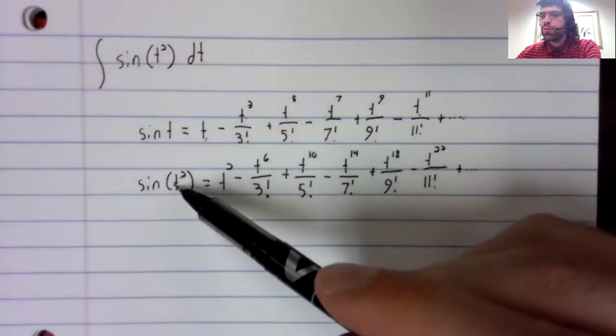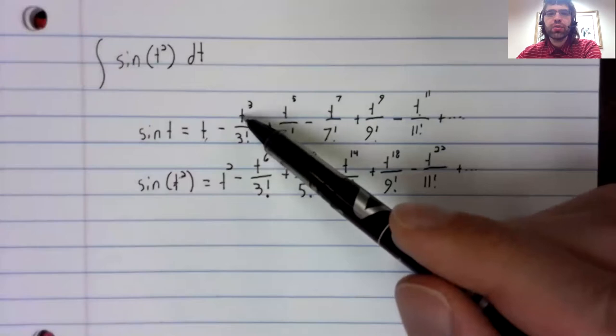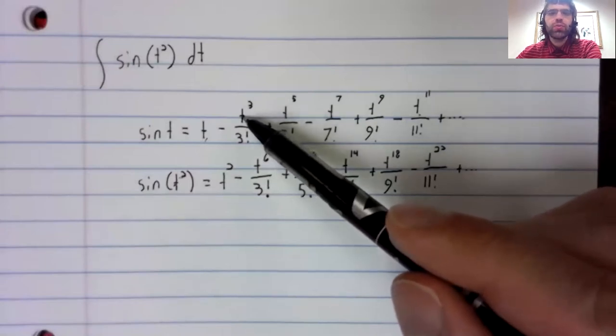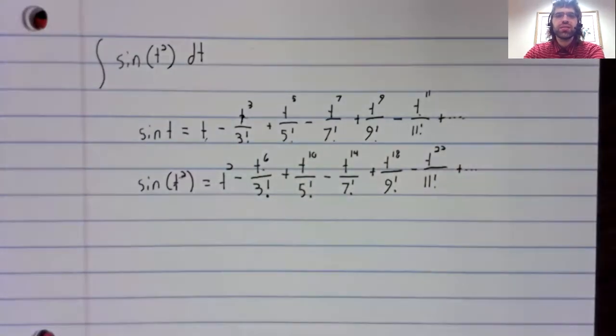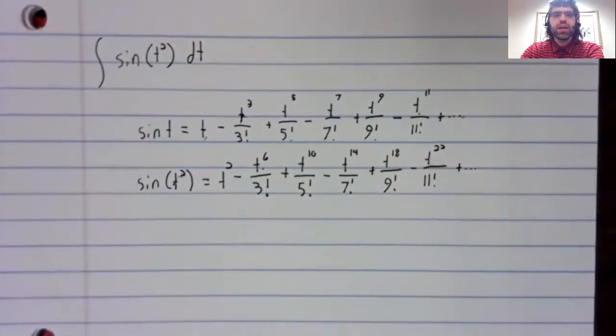So for example, when we stick T squared in here, T squared cubed gives us T to the sixth. And now we can integrate this term by term.